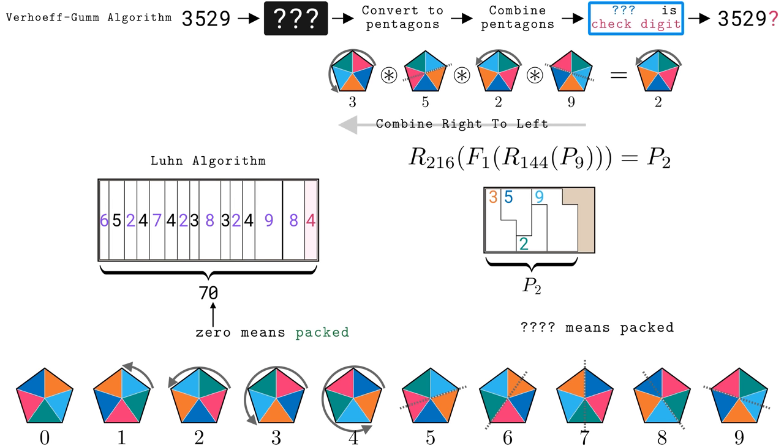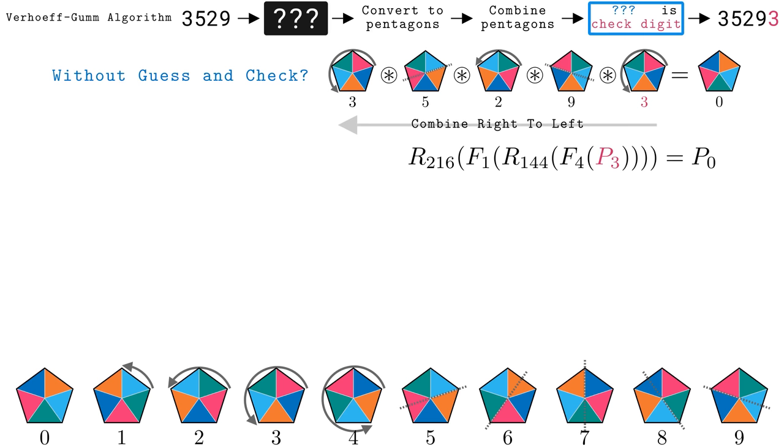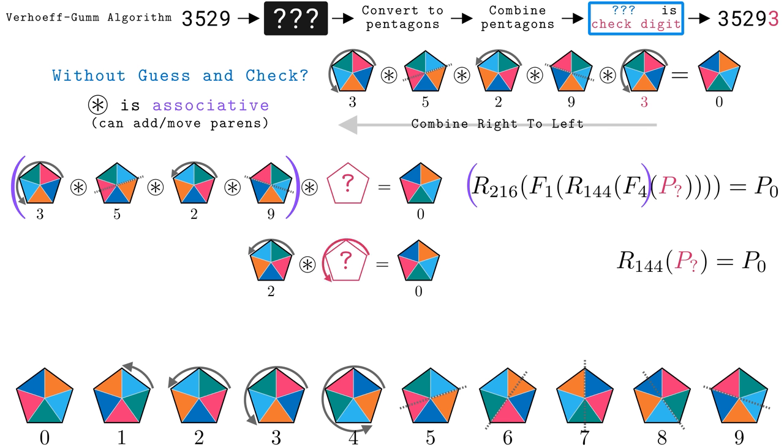The goal of all this is to be able to metaphorically pack the digits, now pentagons, so we can detect if any of them changed. In the Luhn algorithm, the final sum was adjusted to be a multiple of ten. What is the analogy with pentagons? Instead of making the last digit in the computation be zero, what if we made sure all the pentagons combined to be pentagon zero? In the 3529 example, we could use guess and check to stick a pentagon to the end, eventually finding that pentagon 3 makes the final result be pentagon zero. To calculate that final digit without guess and check, we can make use of the fact that combining pentagons is associative.